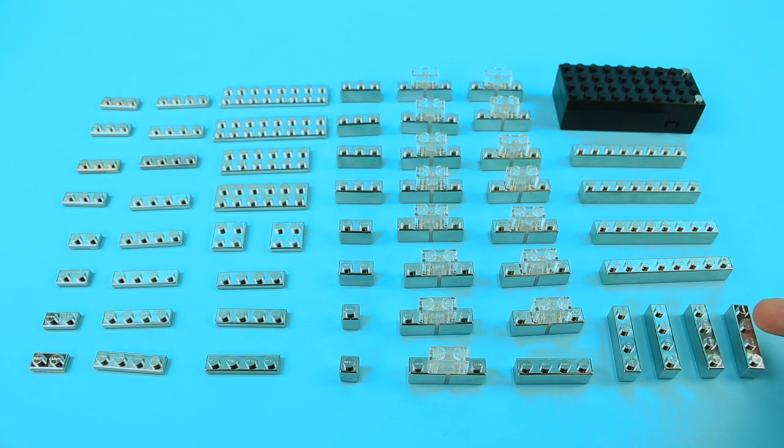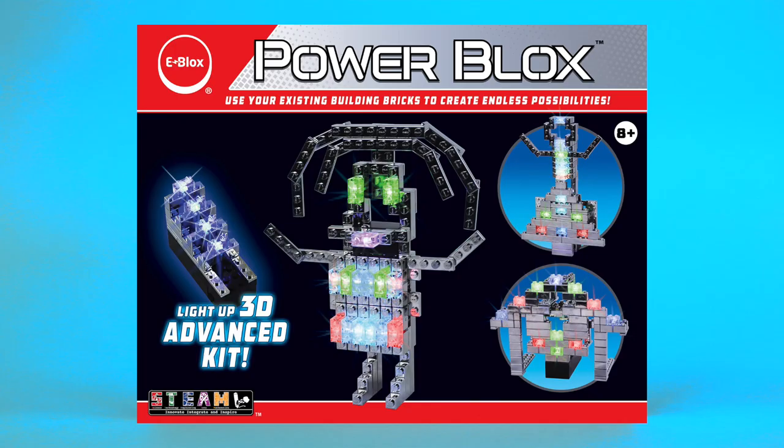You'll also need five 1x4 bricks, four 1x8 bricks, and the battery box. All of these pieces can be found in the Power Blocks Advanced kit.